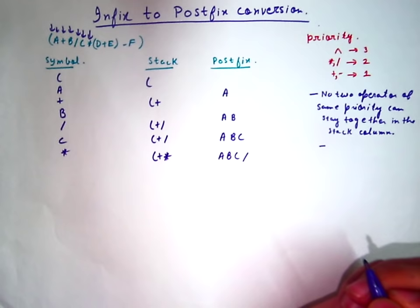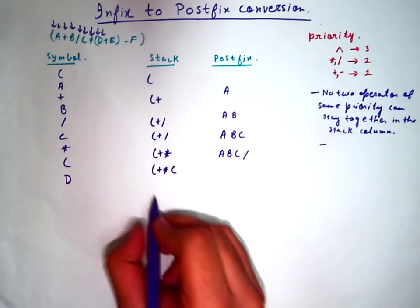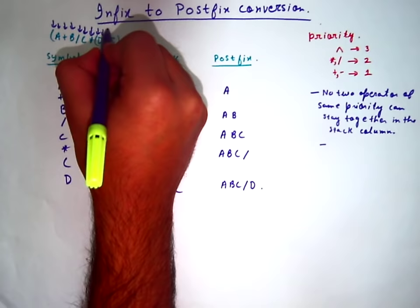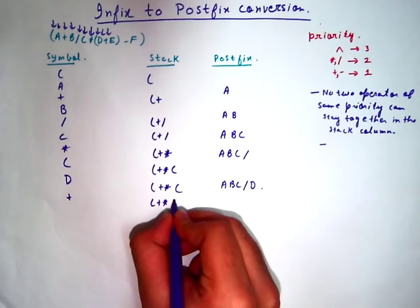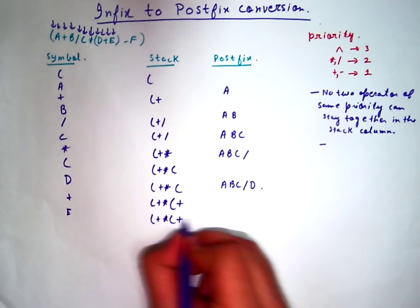Next, we have this bracket — we'll put it here. Next, we have B. The stack will remain the same and we will add D to the postfix column. Next comes plus. Since there was a bracket, plus will be here only. Next is E. The stack will remain same. E will be added to the postfix column.